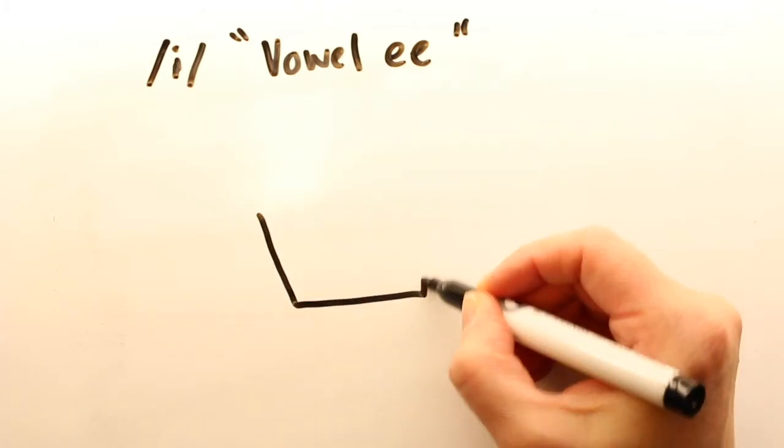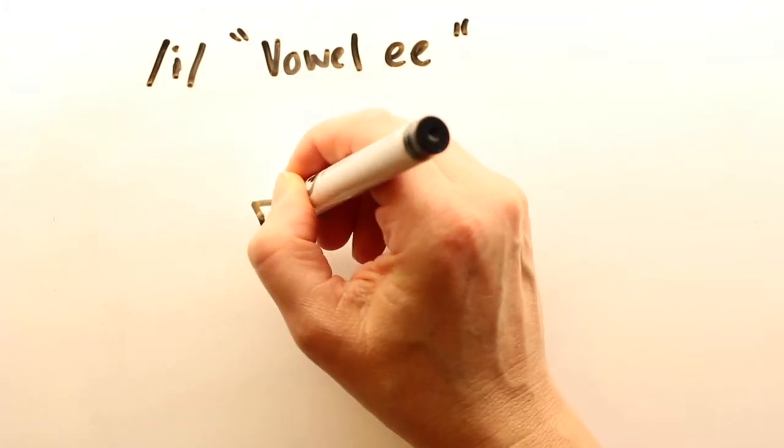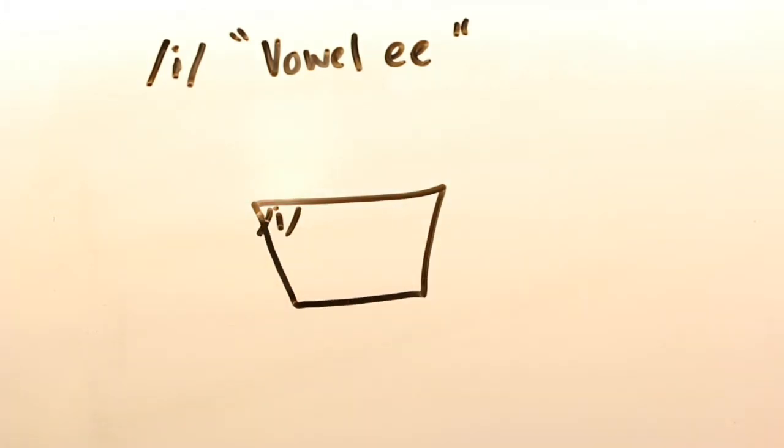Vowel E is a high front tense vowel, meaning I make it with my tongue high and towards the roof of my mouth and towards the front of my mouth, with facial muscles engaged.